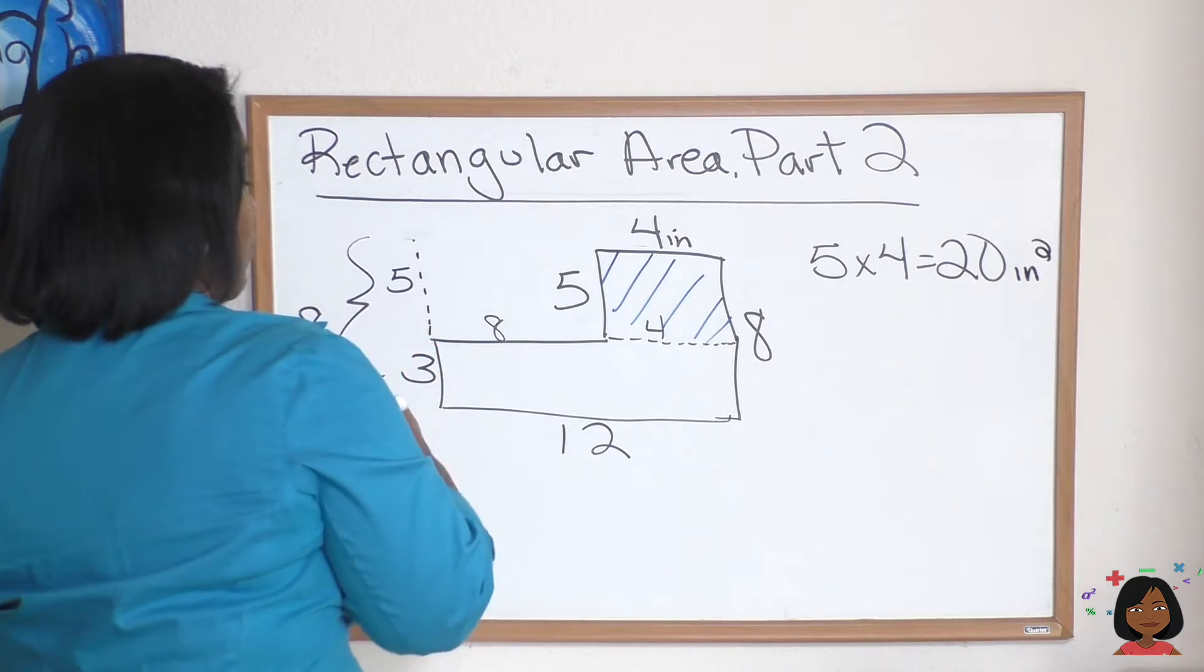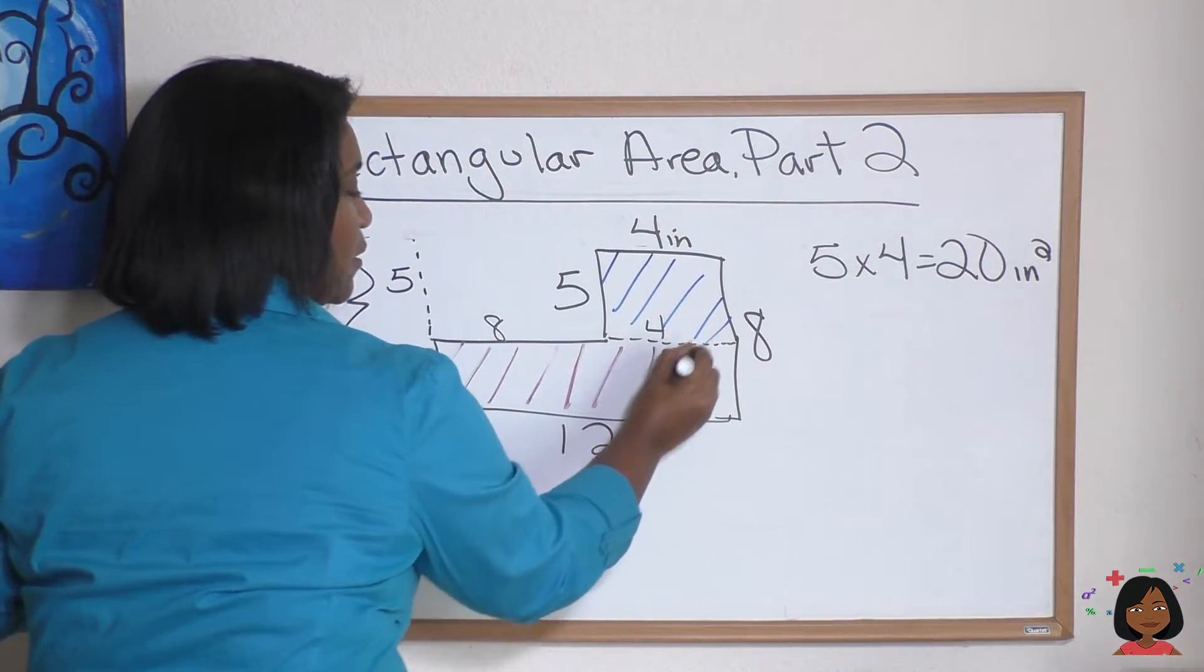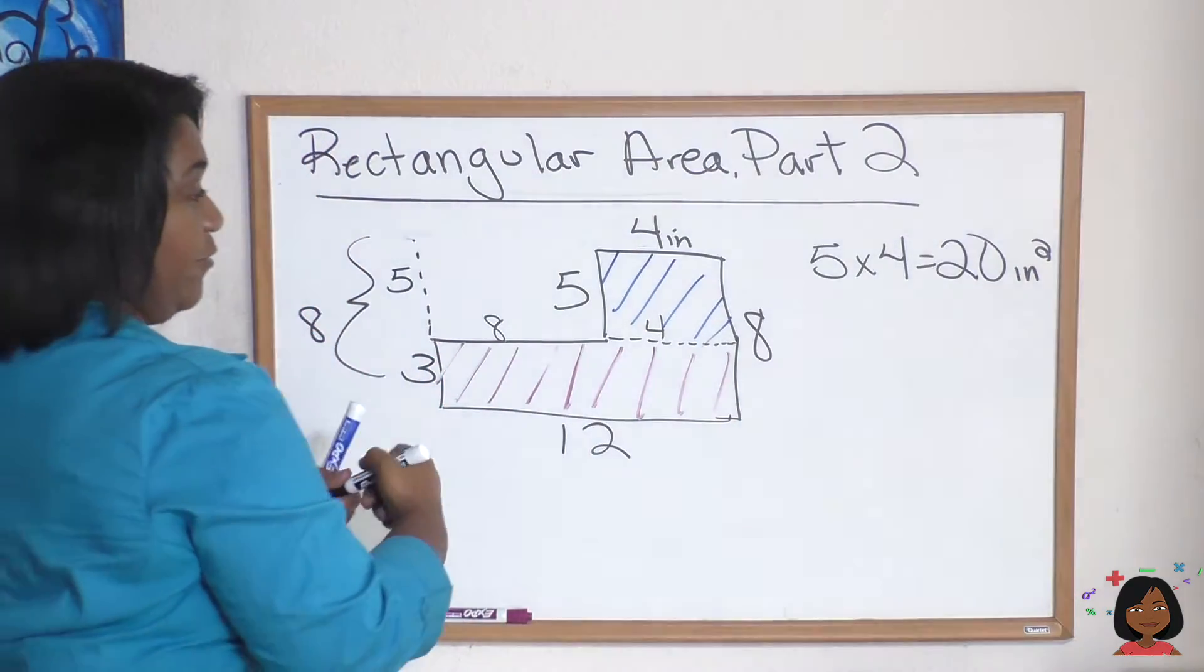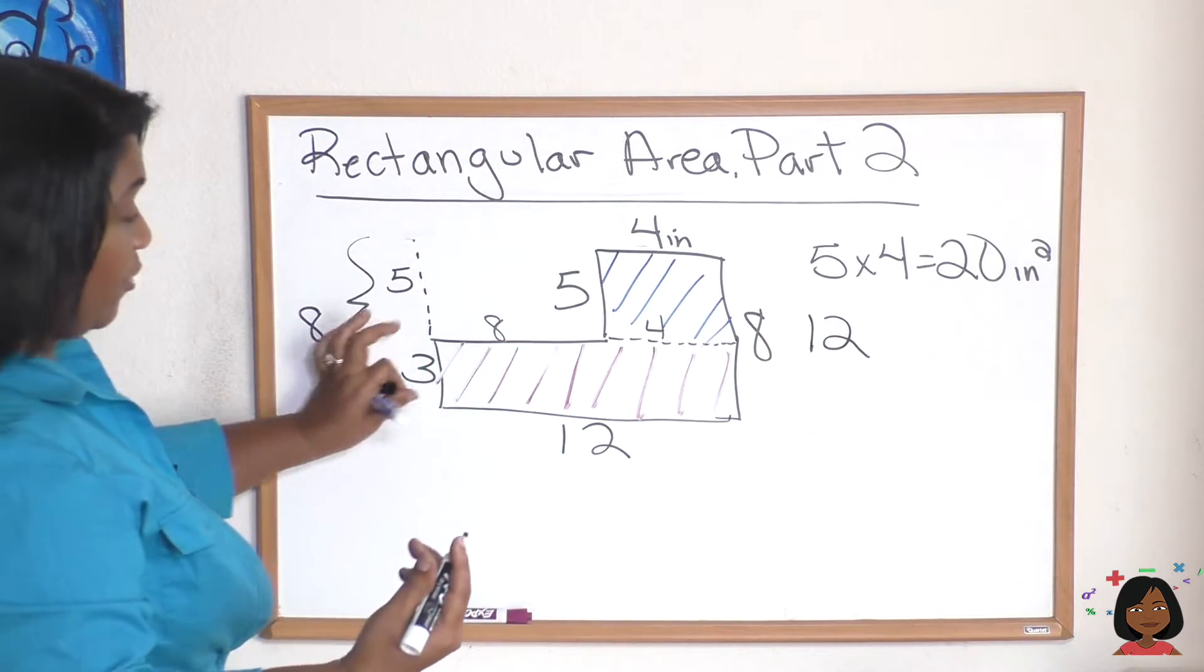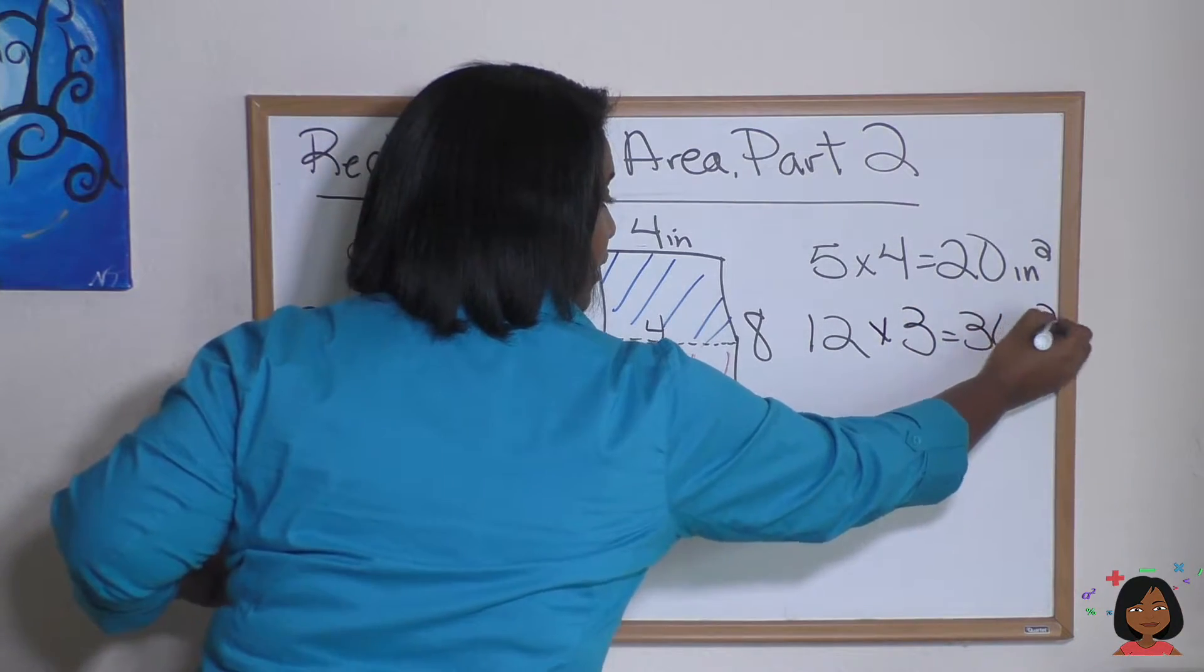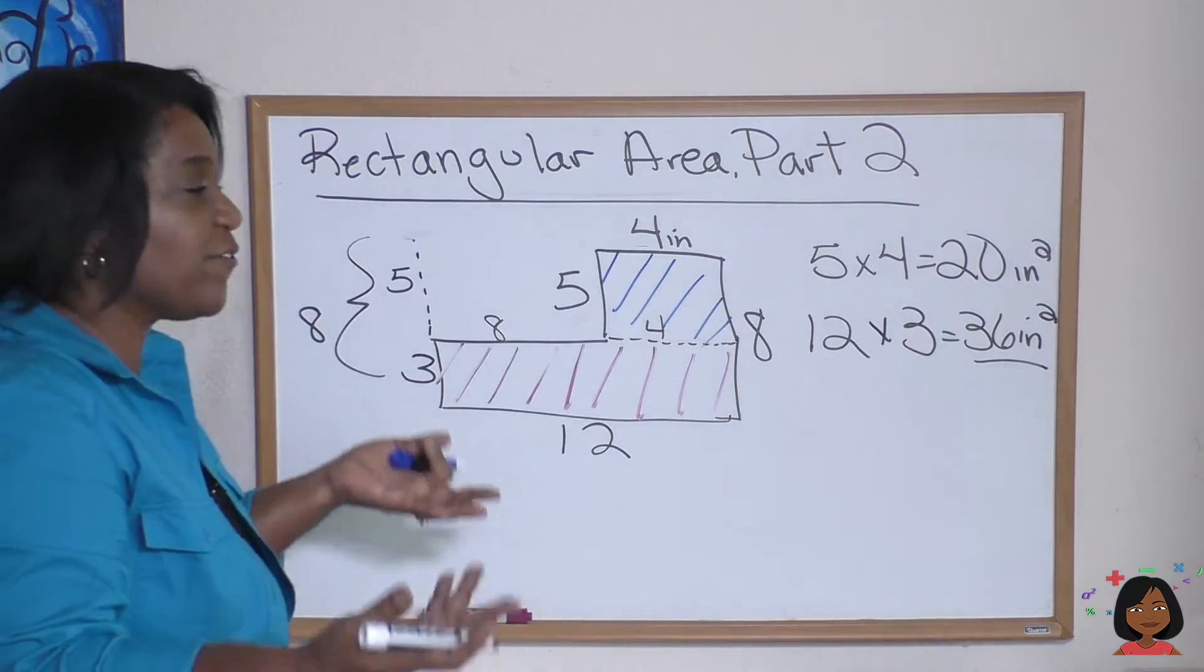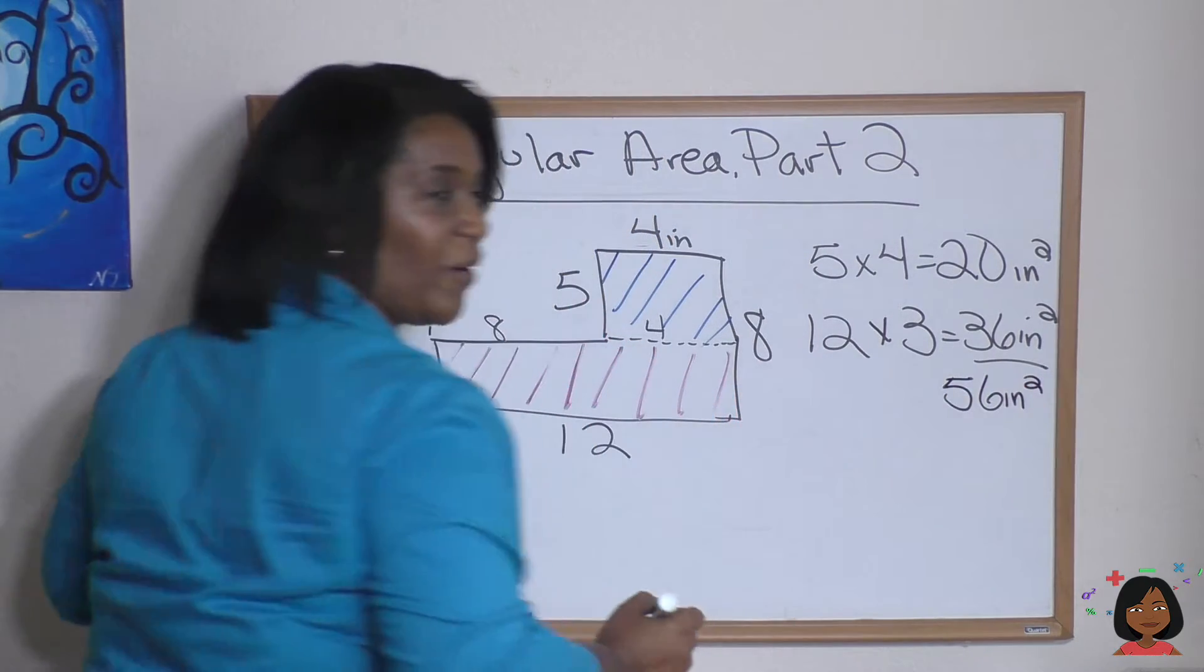And let's use our little purple marker for the second piece. We know that our length is 12 and our width is three. 12 times three is 36 inches squared. So I've got them two individually.